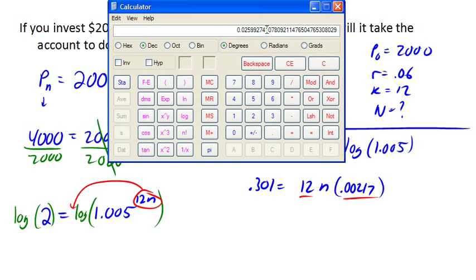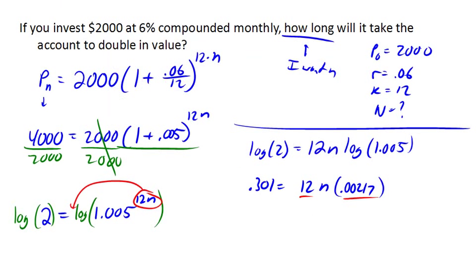0.0260 times n. So that was the 12 times the 0.00217.